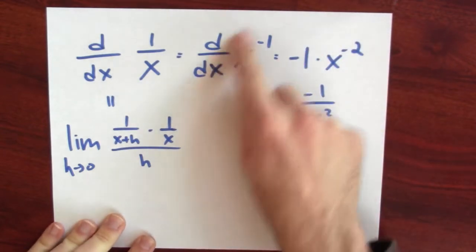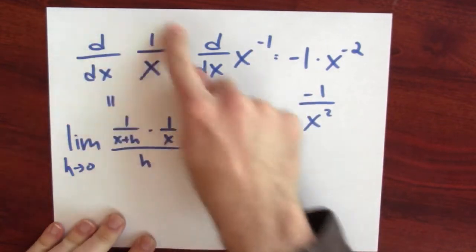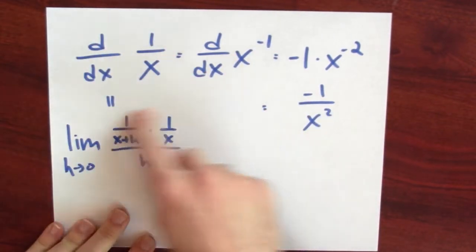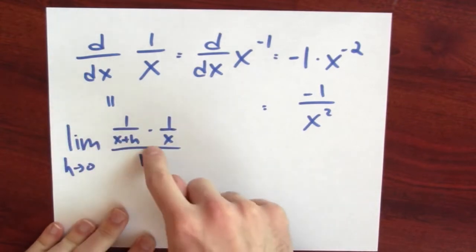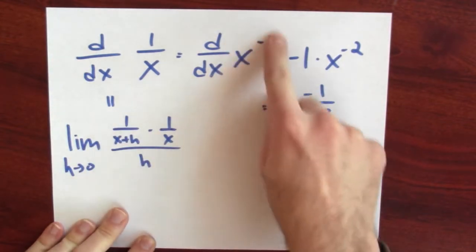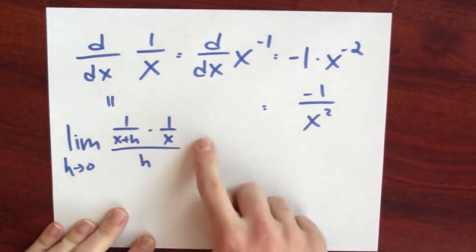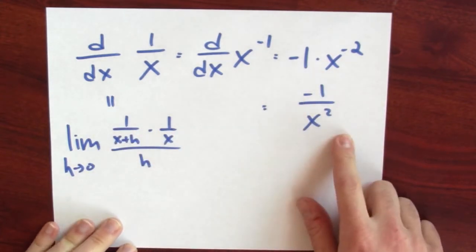If you weren't certain why the power rule held, you could also calculate this derivative by hand by going back to the definition of the derivative. This is actually how we justified the power rule for negative exponents — that limit you can also calculate gives minus 1 over x squared. Knowing how to differentiate 1 over x is enough for us to differentiate 1 over g of x by using the chain rule.